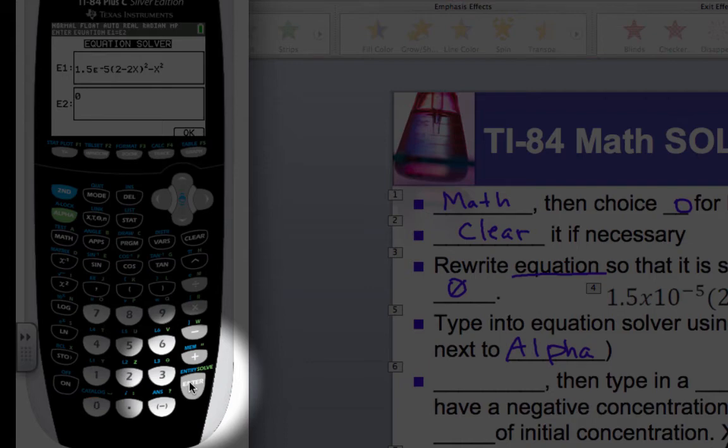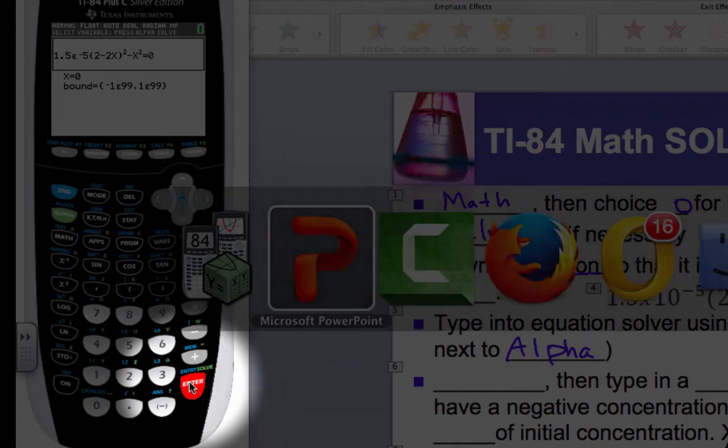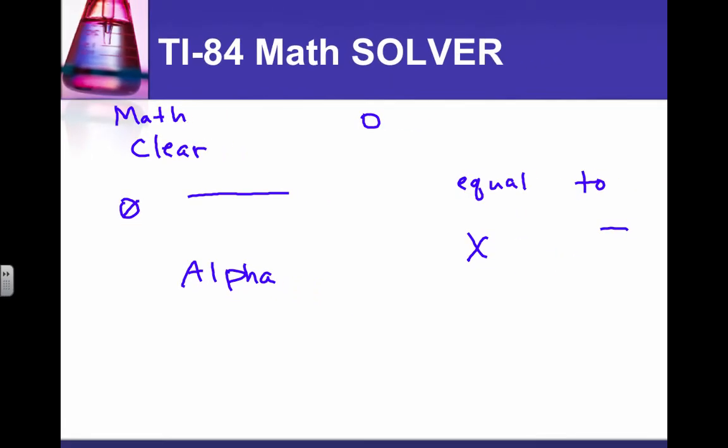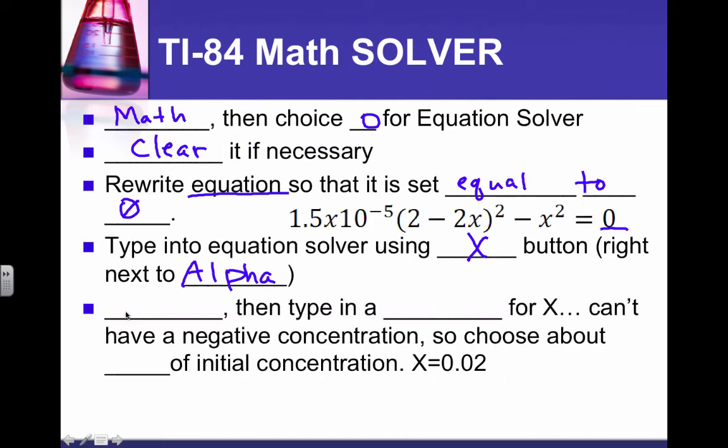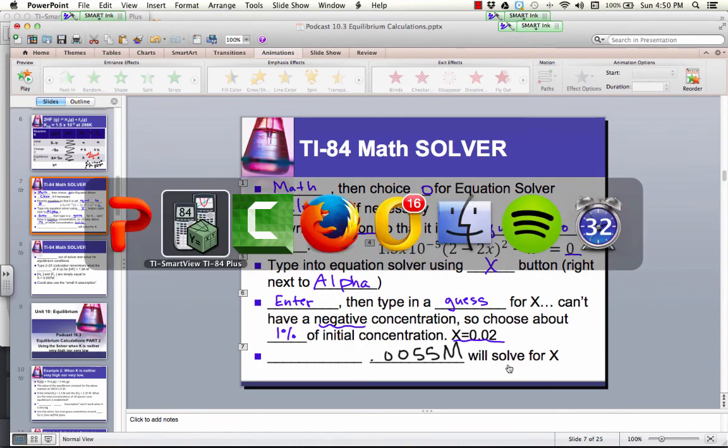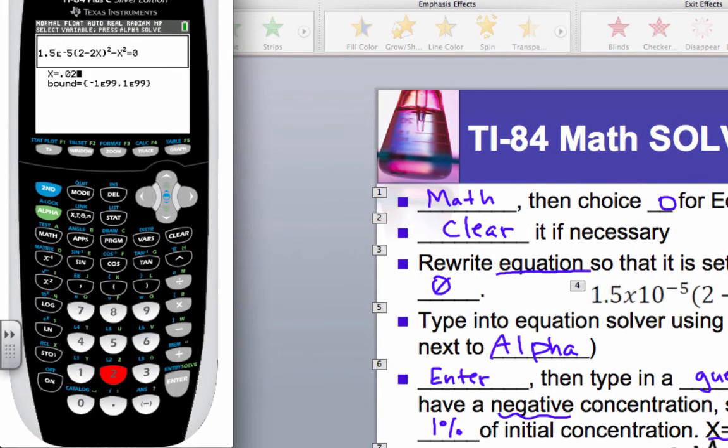So 1.5 E to the negative 5. Don't use the subtract to put a minus sign in somewhere. Then after that I have parentheses 2 minus 2. And then I'm using the X button here that puts a variable in there, not the alphabet X. Then close that parentheses and that one is squared, so we have to square that quantity. Then I subtract an X squared. Next, when we hit enter, we have to type in an assumption for X. So I'm going to type in my guess for X to be about .02. I just always do 1% of my starting concentration.